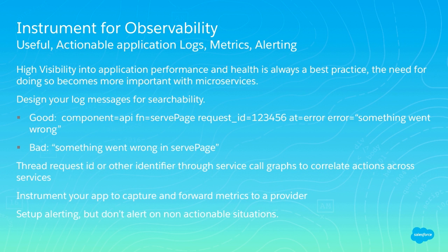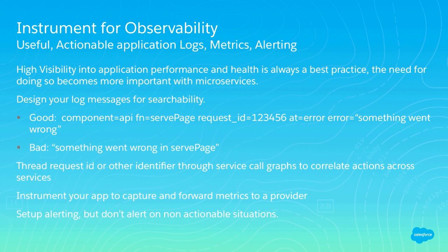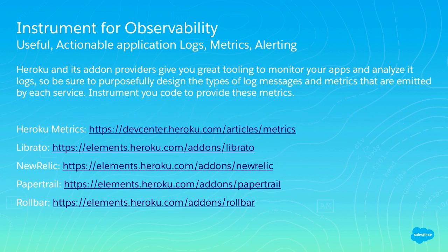Instrumenting for observability: it's easy to know what's going on in a monolith, but in microservices you need actionable logs, metrics, and alerting. Design log messages to be searchable. Thread request IDs through the service call chain — front-end to service A to service B to service D — so you can trace a request through a log search. Heroku provides generic metrics in the dashboard. You can instrument your app to export to Librato for graphing, New Relic for monitoring, PaperTrail for logs, and Rollbar for exception tracking.